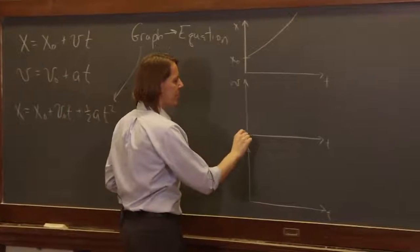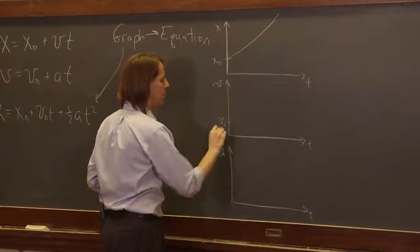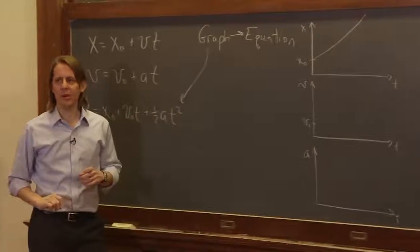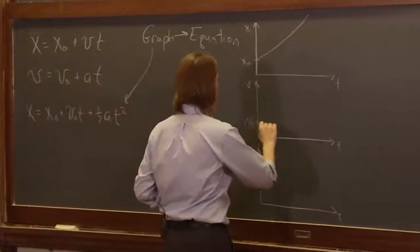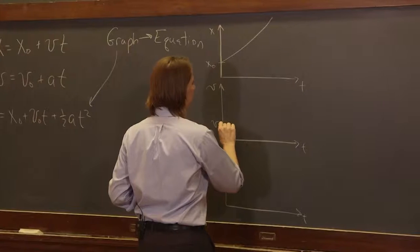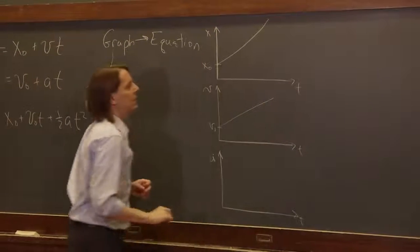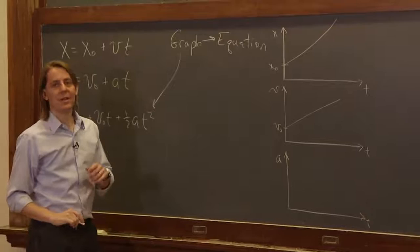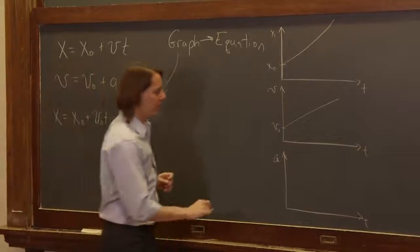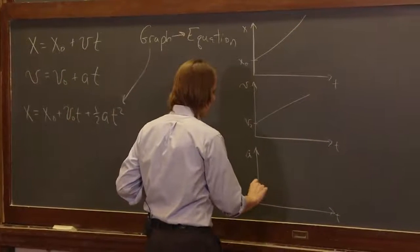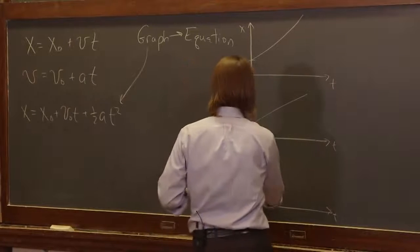The velocity also is not going to start at the origin. It's going to start with some initial value, and it's going to go up like a line because it accelerated like that. And the acceleration is constant. Acceleration is almost always constant at some value greater than zero like this.